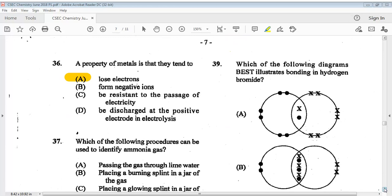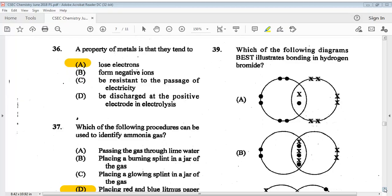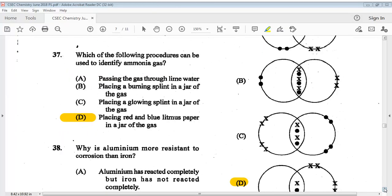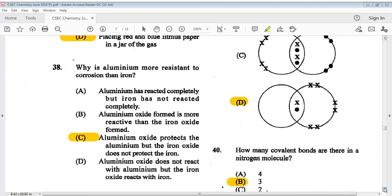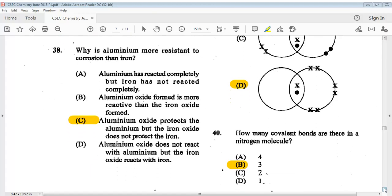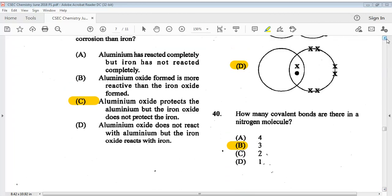Question thirty-six: a property of metals is that they tend to? The answer is A, lose electrons. Question thirty-seven: which of the following procedures can be used to identify ammonia gas? The answer is D, place red and blue litmus paper in a jar of the gas. Question thirty-eight: why is aluminum more resistant to corrosion than iron? The answer is C, aluminum oxide protects the aluminum but the iron oxide does not protect the iron.